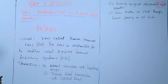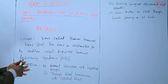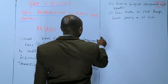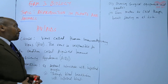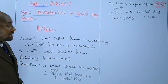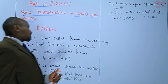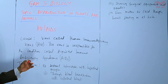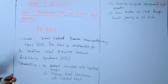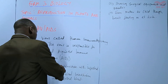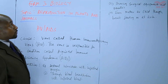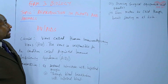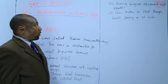HIV AIDS is caused by the Human Immunodeficiency Virus, known as HIV, whereby the immune system is compromised, leading to immunodeficiency. The virus is responsible for the disease called AIDS — Acquired Immune Deficiency Syndrome. The modes of transmission include sexual intercourse with HIV positive people, blood transfusion with infected blood, sharing of surgical equipment and needles, and from mother to child through breastfeeding or at birth.